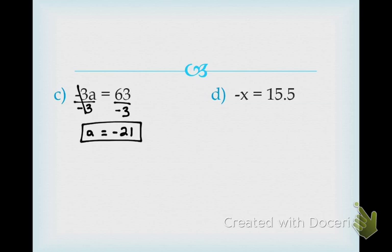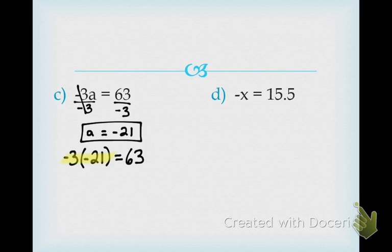Box it in because that's our answer, but now we want to check it. Write down the original problem: negative 3 times, and what do I put in? Negative 21, equals 63. What is negative 3 times negative 21? 63. Bring down equals 63. Do those two equal each other? Yes, it does.